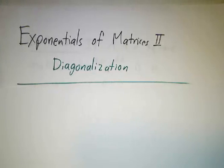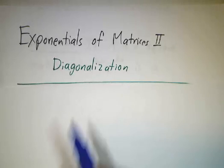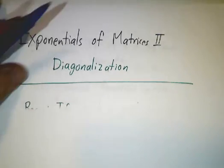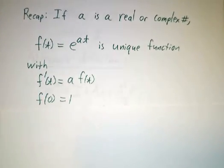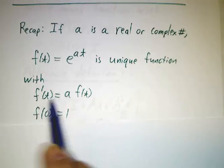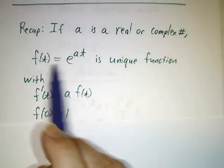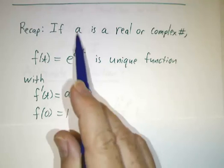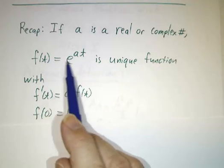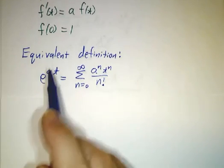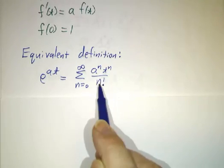In this video, we're going to continue our investigation of what it means to take the exponential of a matrix, and we're going to see that by diagonalizing the matrix, we'll understand the exponential of a matrix very well. Let's recap what we learned last time. If you have a real number, you can define the exponential e to the at to be a function where f' is a times f and f(0) is 1. If a is a complex number, then f is the complex-valued function whose derivative is a times f, whose value at 0 is 1. You can also use a power series — whether a is real or complex, you can define e to the at to be the sum of a to the n, t to the n over n factorial.